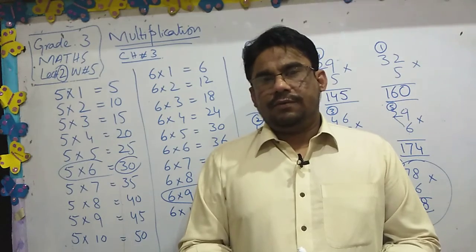And last question is 78 multiplied by 6. Again, 6 eights are 48. This is 8, 4 you carry it. 6 sevens are 42, 42 add 4 equals 46. So answer is 468.